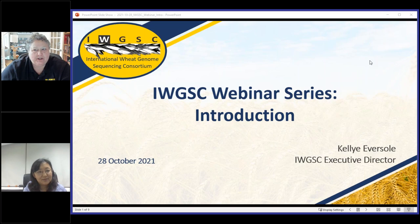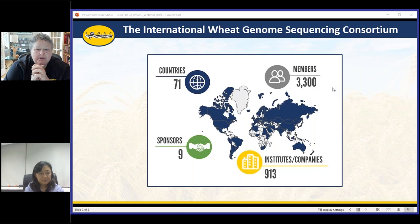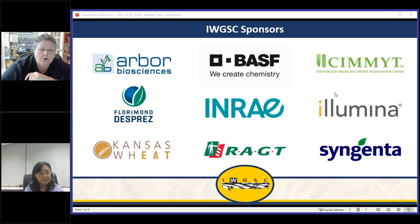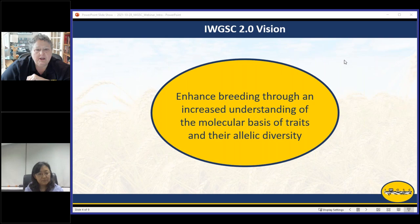Before we get into the presentation, I'd like to give you a little overview of the IWGSC. The International Wheat Genome Sequencing Consortium is an international consortium that consists of over 3,300 members in more than 900 institutes and companies in 71 countries. We also have nine sponsors, because they make it possible for us to have this webinar series. We recently announced a new sponsor, CIMIT, and we're really greatly pleased to have them back as a sponsor and engaged with the IWGSC directly.